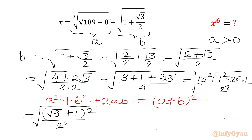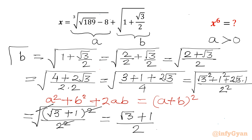Now we can cancel the square root with both the powers. So it will leave us with (root 3 plus 1) divided by 2. So our b value is (root 3 plus 1) divided by 2.